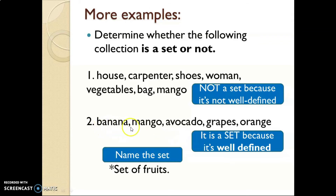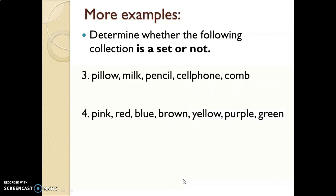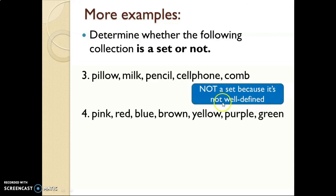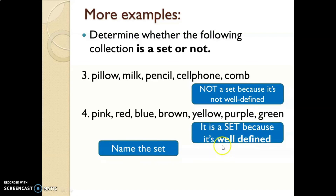Next we have: pillow, milk, pencil, cell phone, and comb. Is it a set or not? Can you identify the common characteristics? If you can't identify a relationship among them, then it is not a set. The answer is it is not a set because it is not well-defined. Number four: pink, red, blue, brown, yellow, purple, and green — are these things related to one another? Yes, it is a set because it is well-defined. Name the set — it is a set of colors.